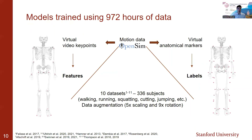In total, we used 972 hours of motion capture data, extracted from 10 datasets and over 300 subjects performing various tasks like walking, running, squatting, jumping, and cutting. We augmented the size of the dataset by scaling each OpenSim model up and down to represent people of different heights. We also rotated the data about the vertical axis to represent motions performed along various directions.